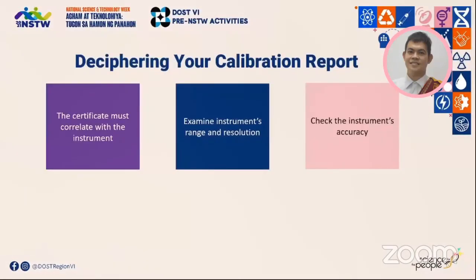The instrument's range and resolution must be examined to see whether these fulfill the measurement requirements. For example, to make a weight measurement of 160.5 grams, the range of the measuring instrument should cover 0 grams to around 200 grams, and the resolution should be 0.1 grams. The next parameter to be checked is the instrument's accuracy. The accuracy of the instrument, or the maximum error reported on the certificate, should meet the specified required accuracy of the measurement.